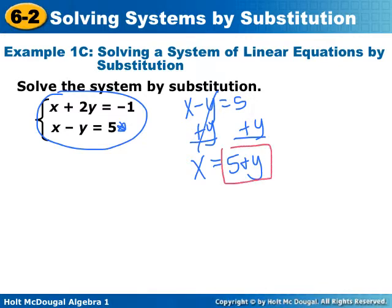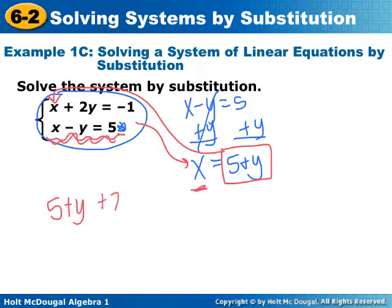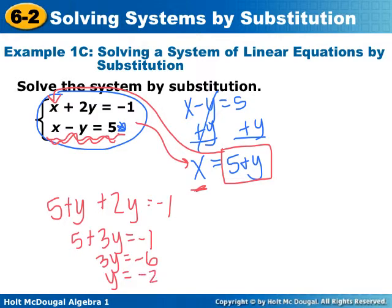So x equals 5 plus y. That means that I can take this and plug it in right here. Since this is the equation that turned into this, I can't substitute back into this one. I have to substitute into the other one. So my new equation, 5 plus y, which equals x, plus 2y is negative 1. So 5 plus 3y is negative 1. 3y is negative 6. So y is negative 2.